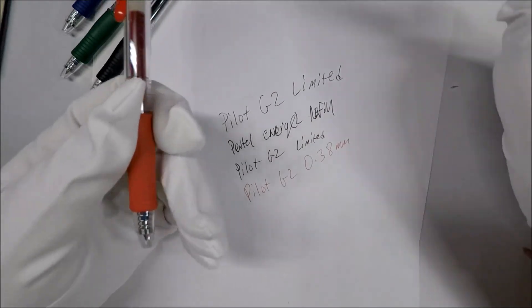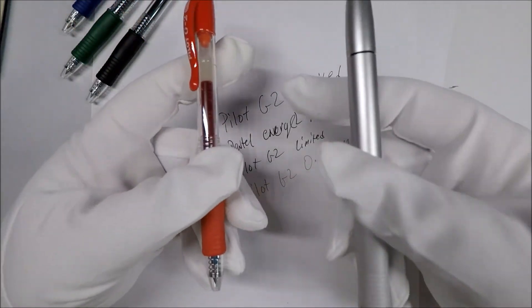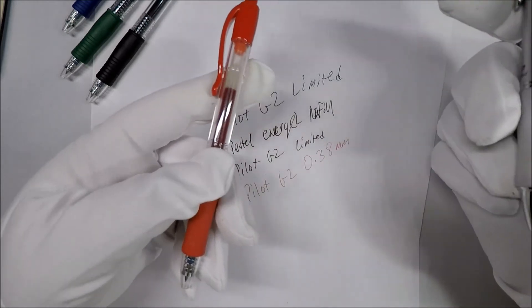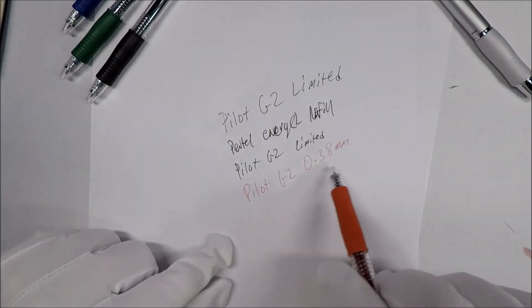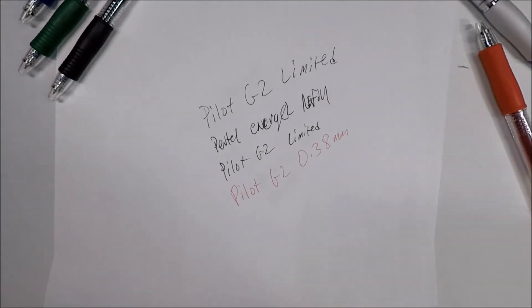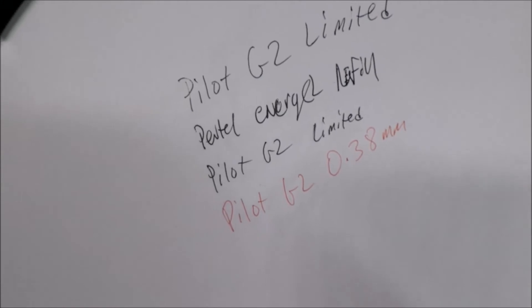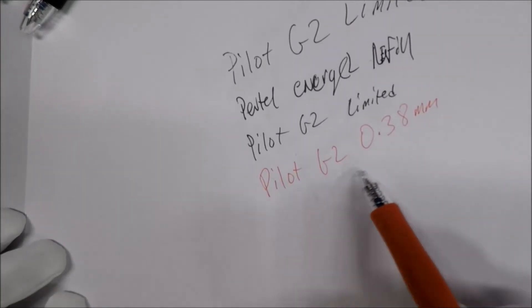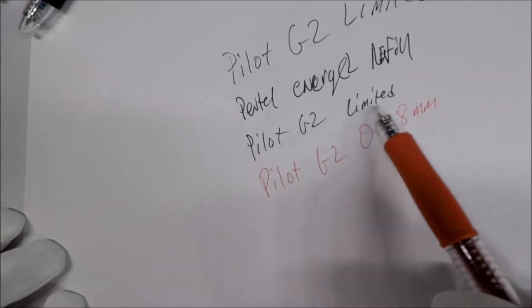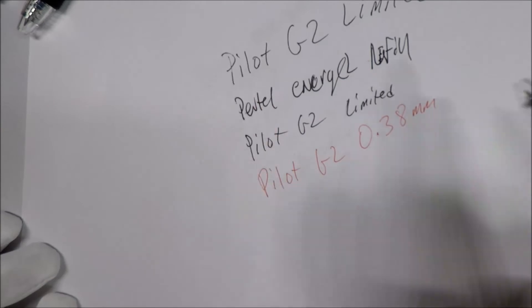Now a quick comparison between the 0.7mm and the 0.38mm. This one feels a little smoother, this one's a teeny bit scratchy. But it's also very, as you can tell, it looks a bit cleaner. Where this one, my writing is terrible there, but you can tell the difference in the tip sizes.